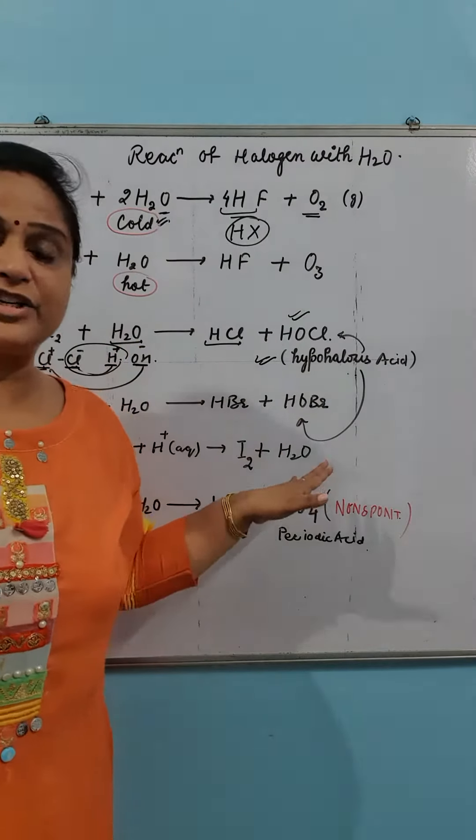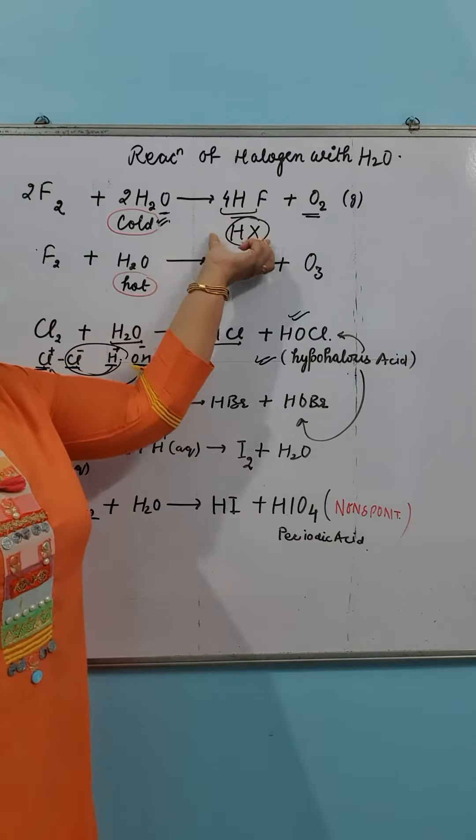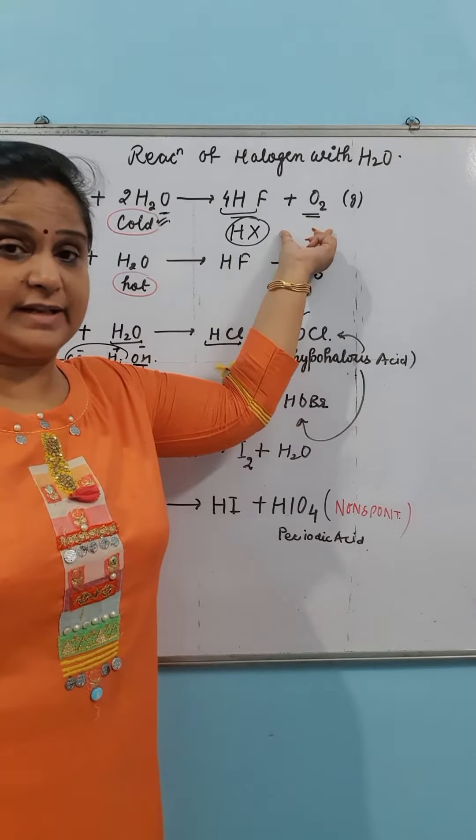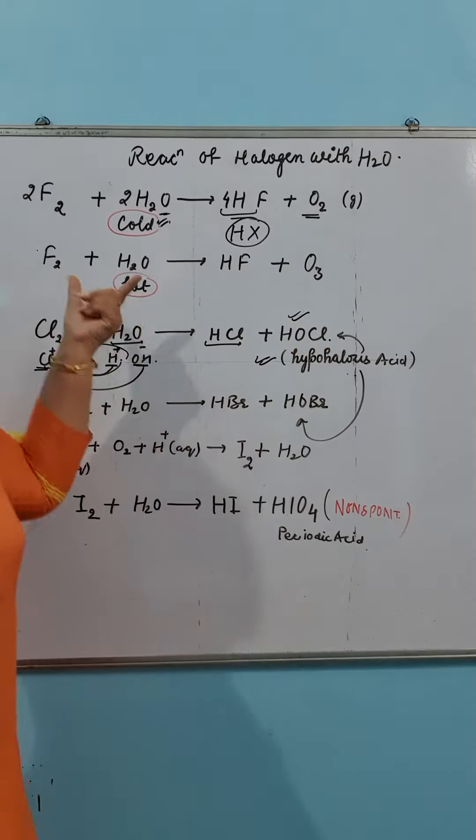So in halogen reactions, you will see that the halogen reacts like this. And because it is highly electronegative, it will extract the oxygen. So you will get two compounds.